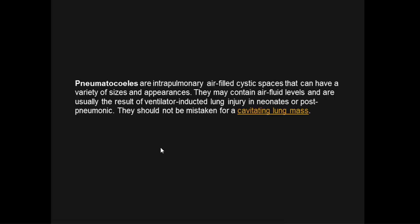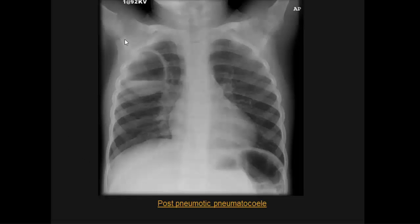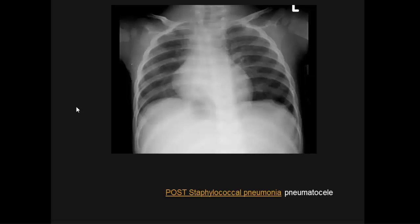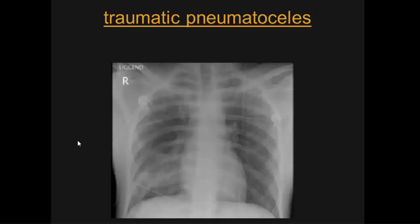Pneumatoceles are intrapulmonary air-filled cystic spaces that can have a variety of sizes and appearances, may contain air-fluid levels, and usually result from ventilator-induced lung injury. They should not be mistaken for cavitating lung tissue. They are seen in injury, neonates, or post-pneumonic settings. Examples include post-pneumonic pneumatoceles, post-staphylococcal pneumatoceles showing air-filled spaces, and traumatic pneumatoceles.